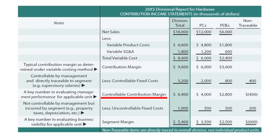We'll subtract those to find a controllable contribution margin, and that's a key number in evaluating management performance for an applicable unit. We'll also subtract certain uncontrollable fixed costs that may not be controllable by management but are definitely incurred by the segment — an example would be property taxes or insurance. Subtracting those amounts gives us the segment margin for PCs, for PDEs, and for the division.